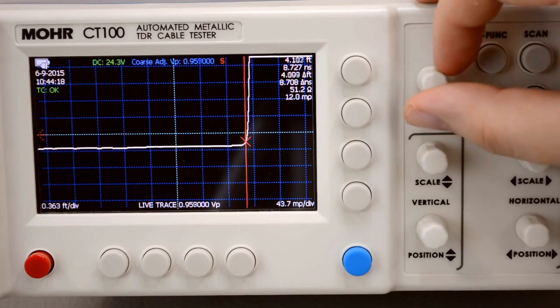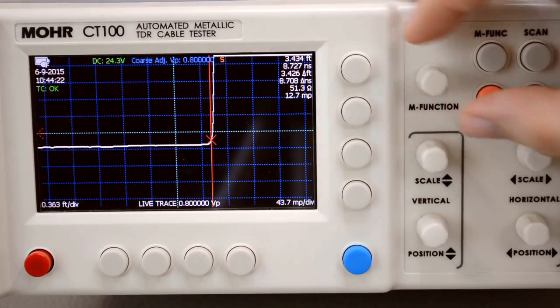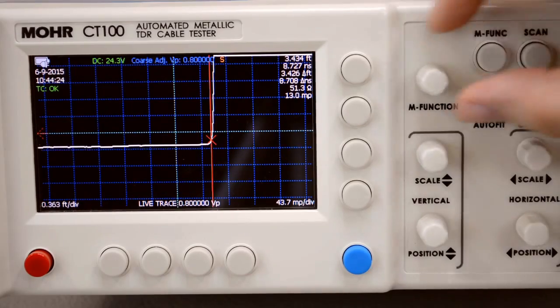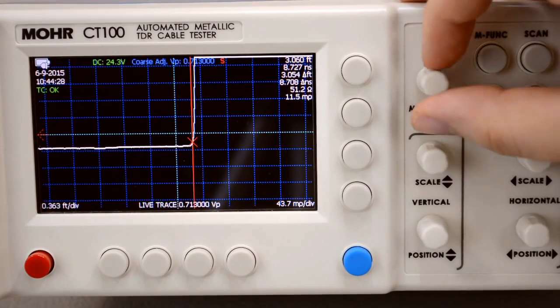So after adjusting the V sub P, just dial it back until this measurement reads the known length of the cable. Since we know the length of the cable is three feet we simply dial it back until we reach three feet. There we go.